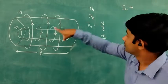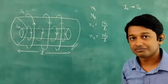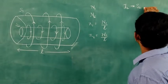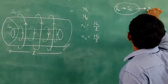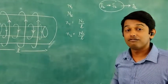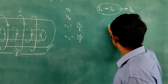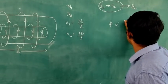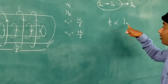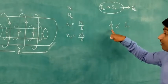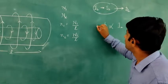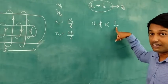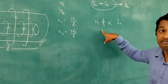Current I2 is induced in the second solenoid S2, and magnetic field B2 is formed. The magnetic flux φ1 in the first solenoid is directly proportional to I2. So N1φ1 is directly proportional to I2 — the current I2 causes a change in magnetic flux φ1 in the first solenoid with N1 turns.